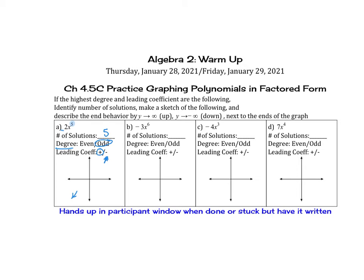The ends look like this: it goes up on the right and down on the left. We don't know what happens in the middle, so we'll leave that blank. Now labeling the ends — on the right, as x approaches positive infinity, the y values are going up, so y approaches positive infinity. On the left, as x approaches negative infinity, the y values are going down, so y approaches negative infinity as well.